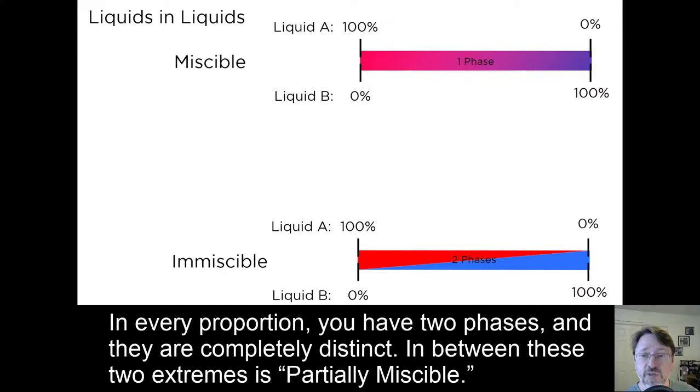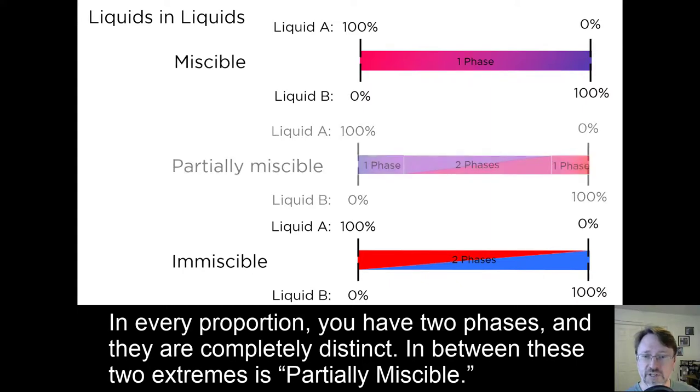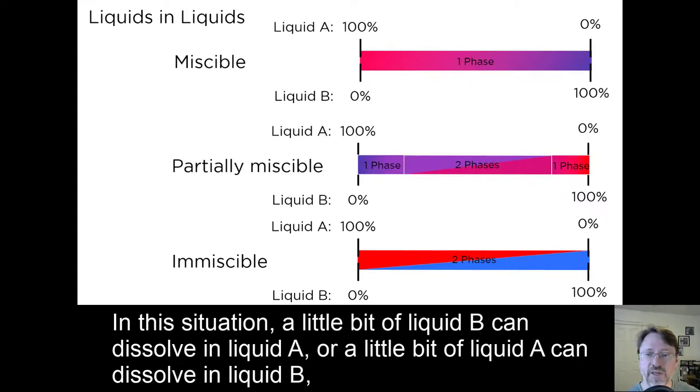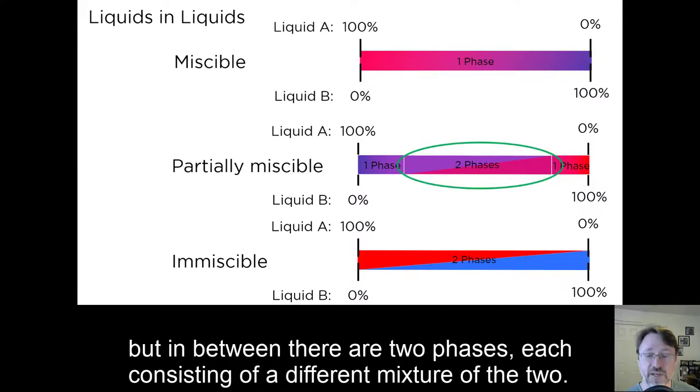In between these two extremes is partially miscible. In this situation, a little bit of liquid B can dissolve in liquid A, or a little bit of liquid A can dissolve in liquid B. But in between, there are two phases, each consisting of a different mixture of the two.